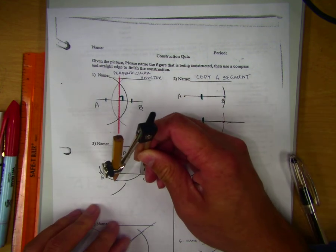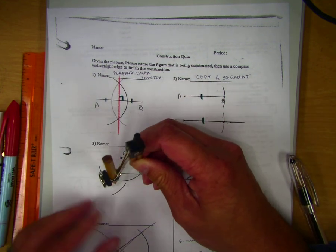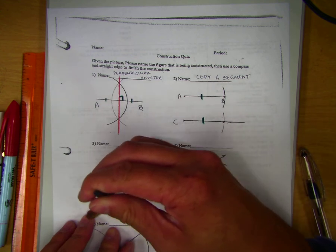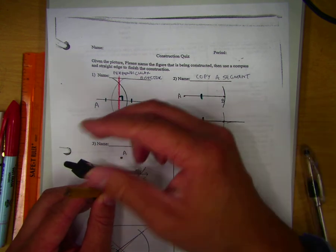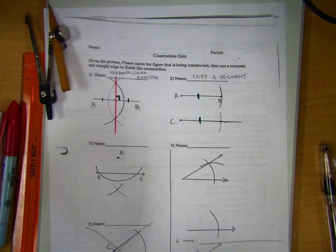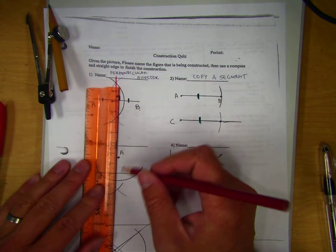So all you have to do is go here to this intersection right here. Draw an arc. And X marks the spot, so go through that.